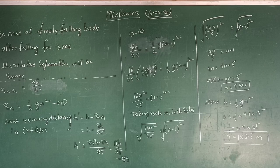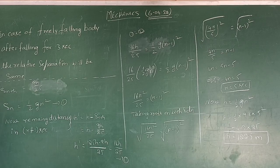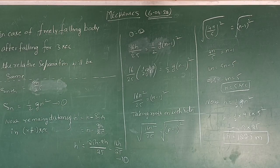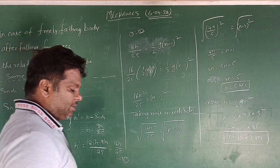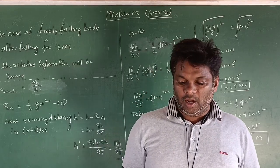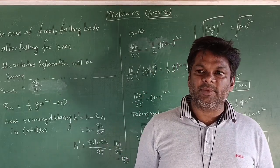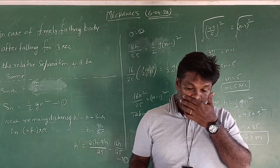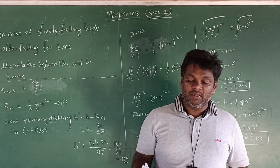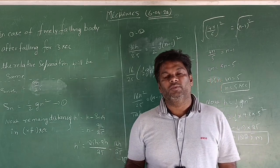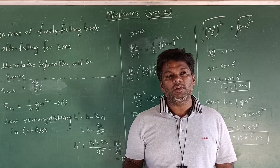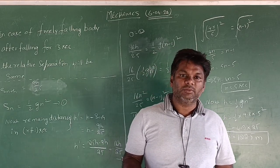Good morning students. In today's class we are going to deal with the new worksheet that I will post today in your WhatsApp group — mechanics. This worksheet is dated 6th April. Problem number one: two bodies, one held 10 meters vertically above the other, are released simultaneously. After falling freely for three seconds under gravity, their relative separation is — this video is for all four sections: F-star, F1, F2, and F3.